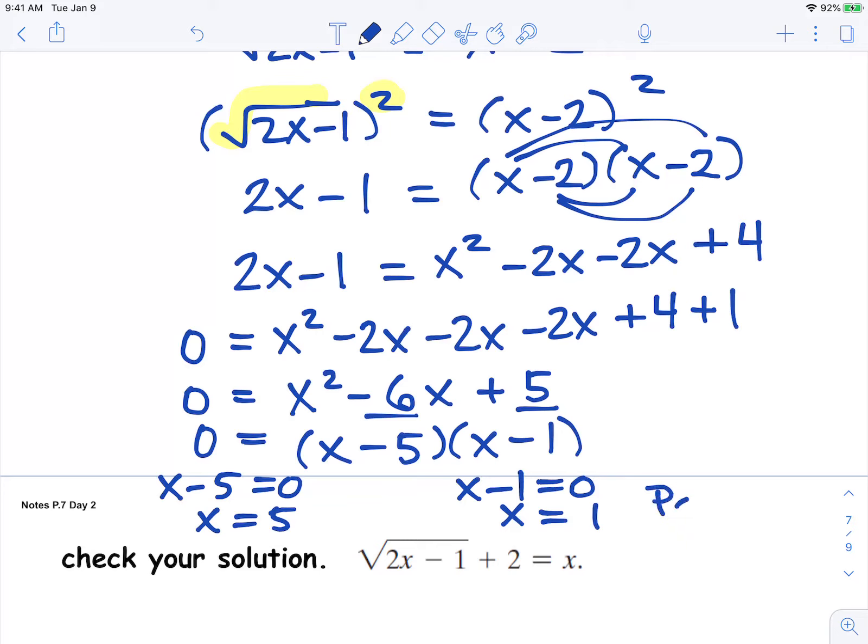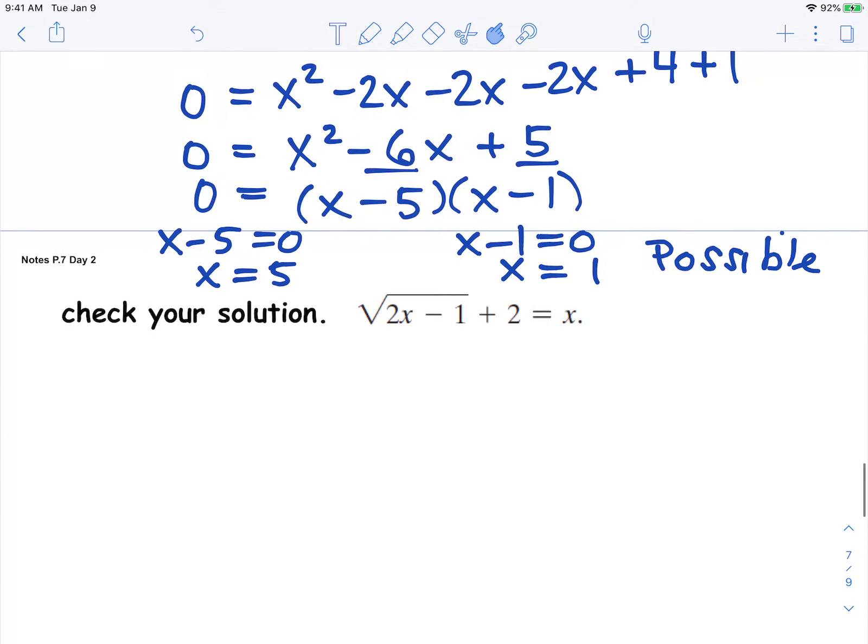So these are the possible solutions for x. We still need to check to see if they are true. So we're going to check the solutions. I'm just going to break this slide in half, and we're going to start by checking x equals 5 and then we'll check x equals 1.